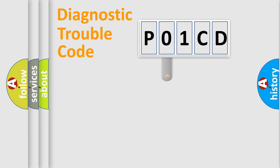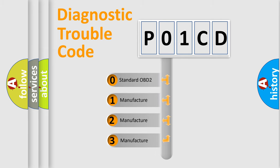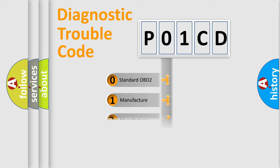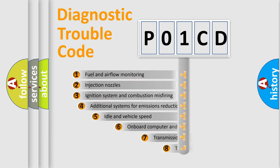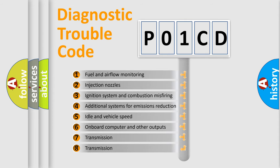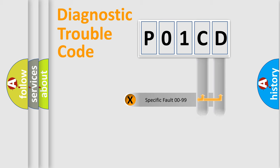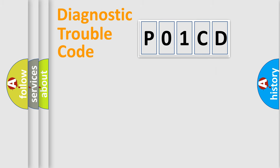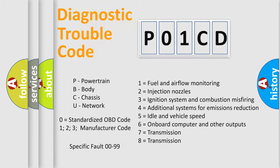This distribution is defined in the first character code. If the second character is expressed as zero, it is a standardized error. In the case of numbers 1, 2, 3, it is a more manufacturer-specific expression of the car error. The third character specifies a subset of errors. The distribution shown is valid only for the standardized DTC code. Only the last two characters define the specific fault of the group. This division is valid only if the second character code is expressed by the number zero.